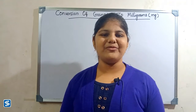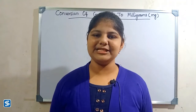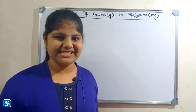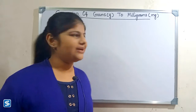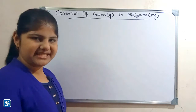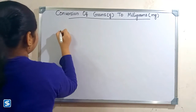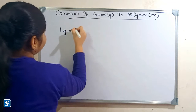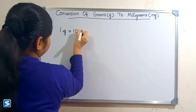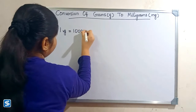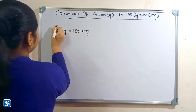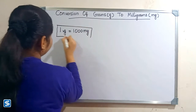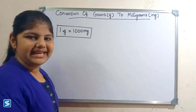Hi friends, welcome to Samush channel. In this video I am going to teach how to convert grams into milligrams. The formula for converting grams into milligrams is: one gram is equal to 1000 milligrams. Now we will take some examples.